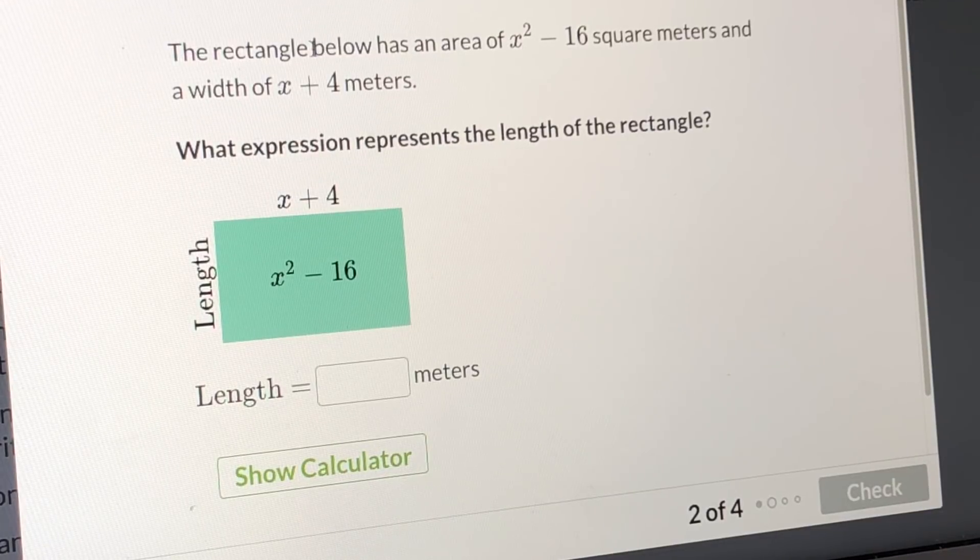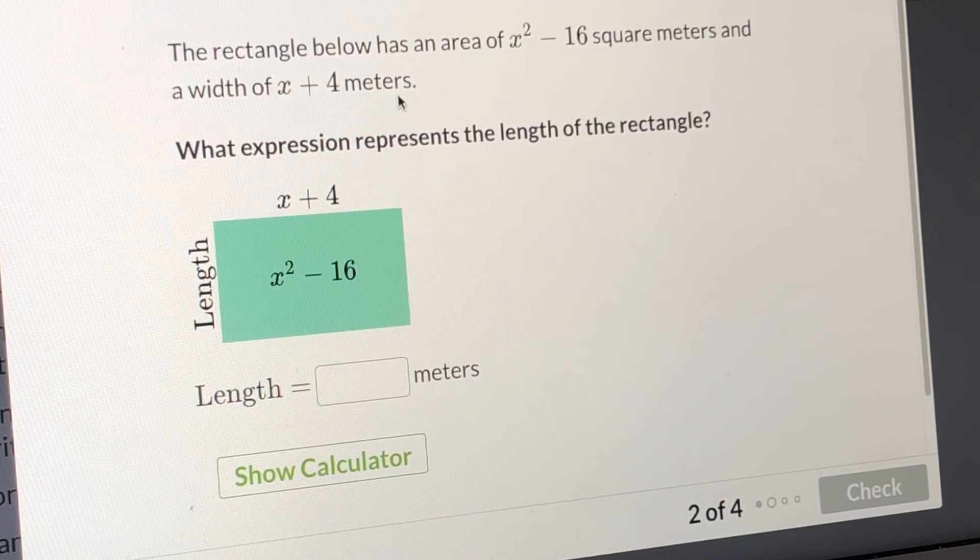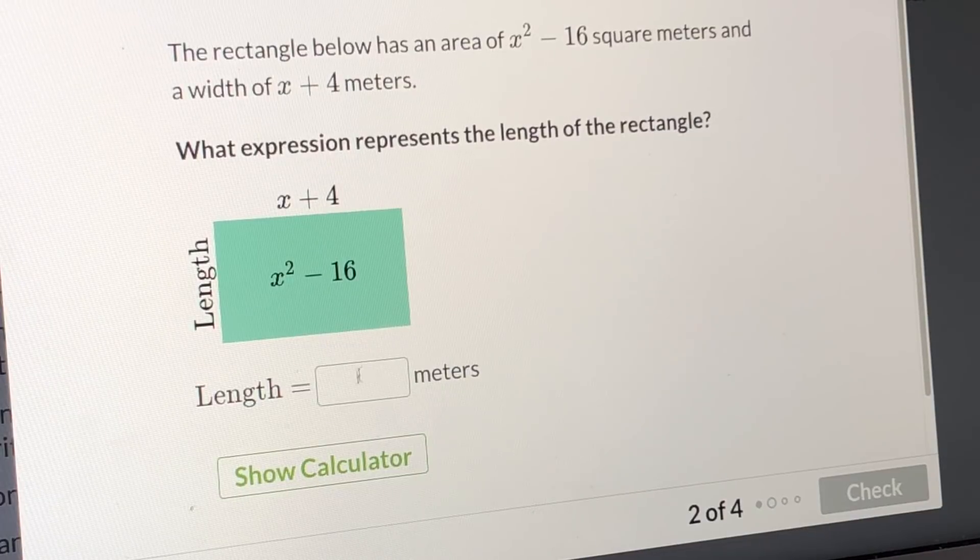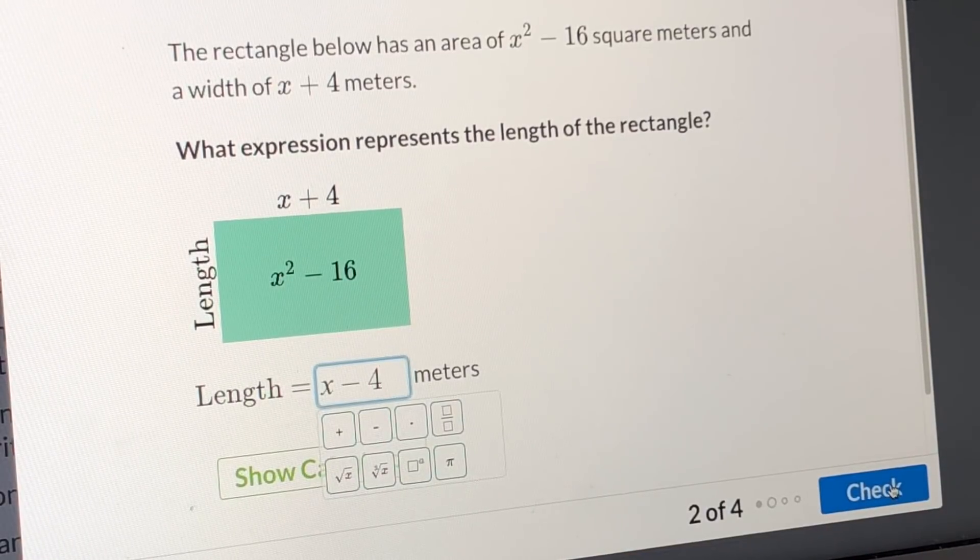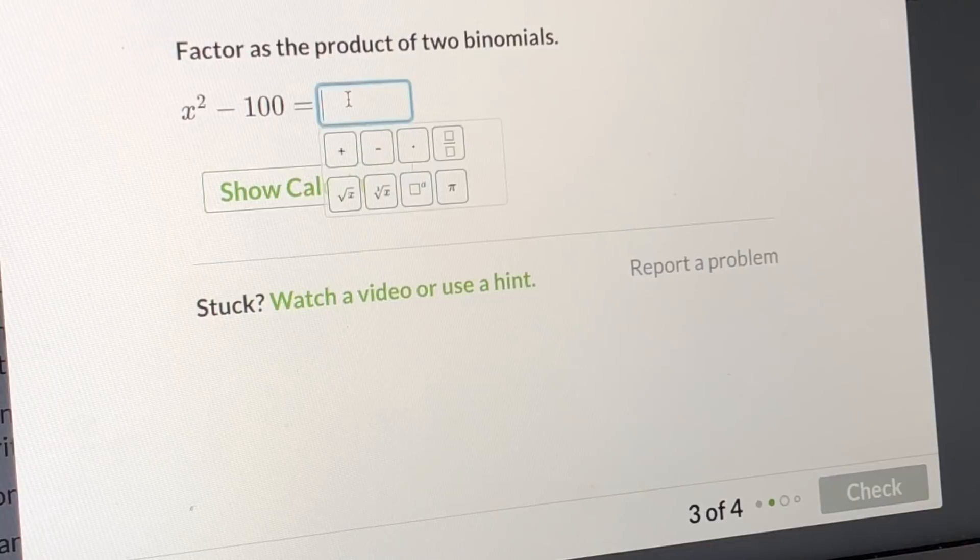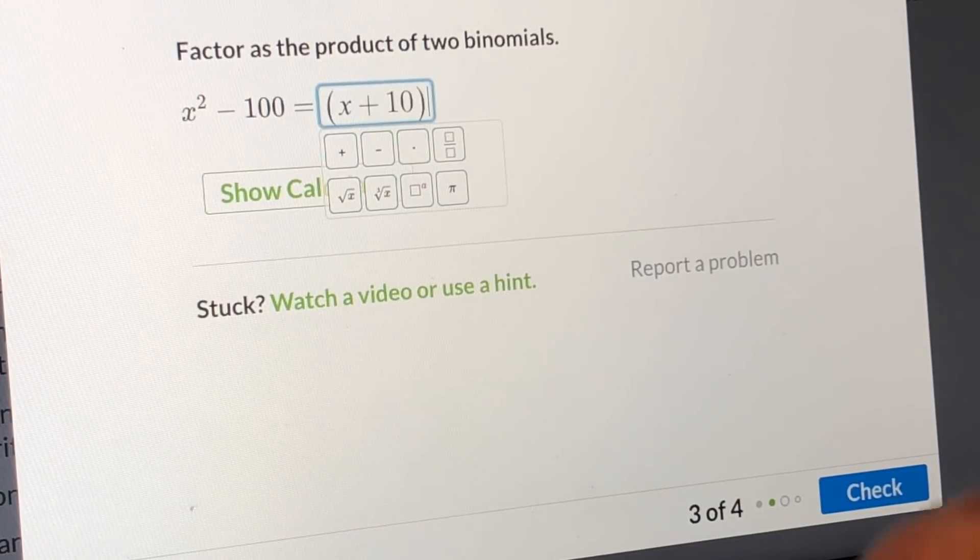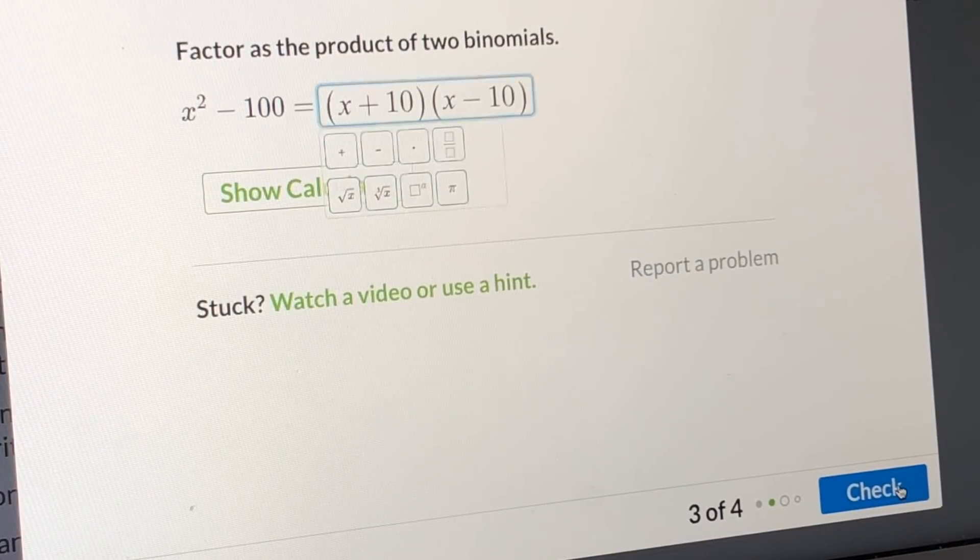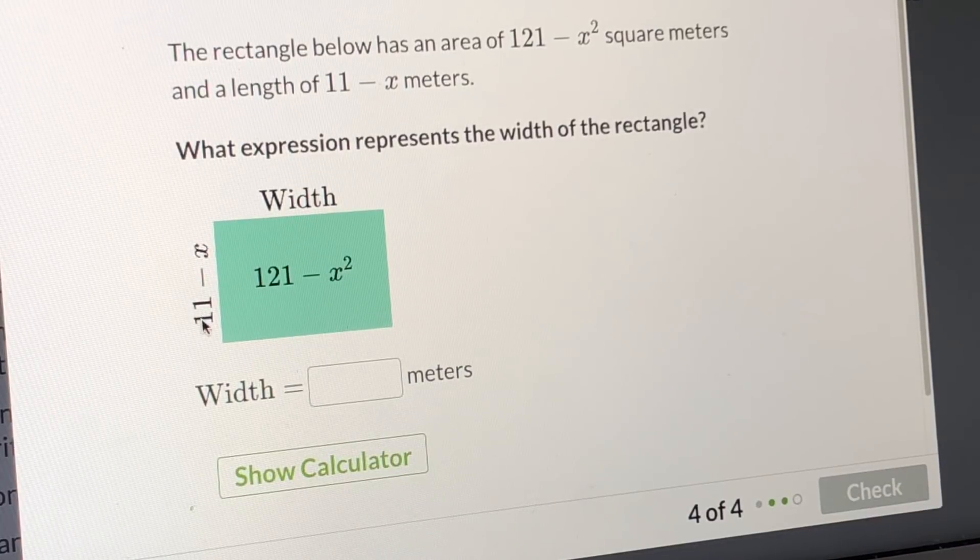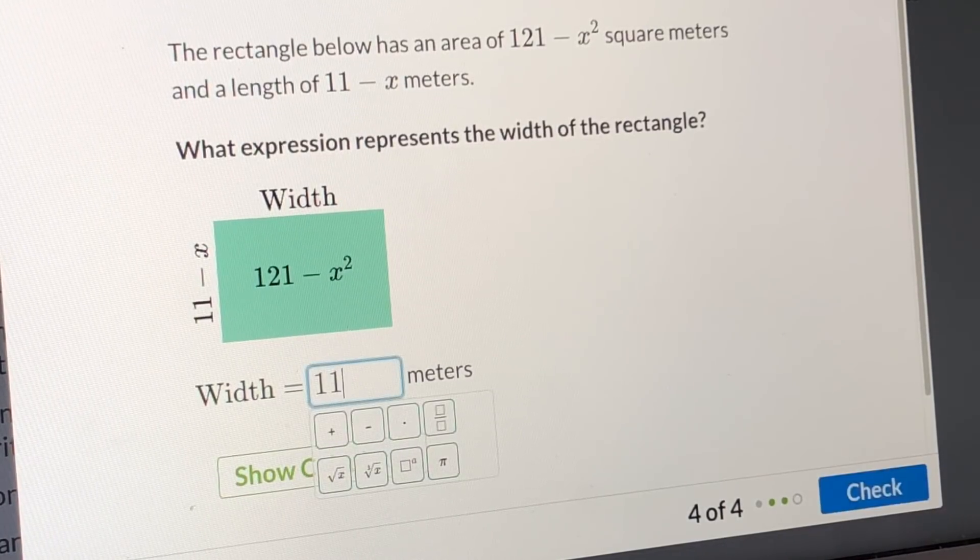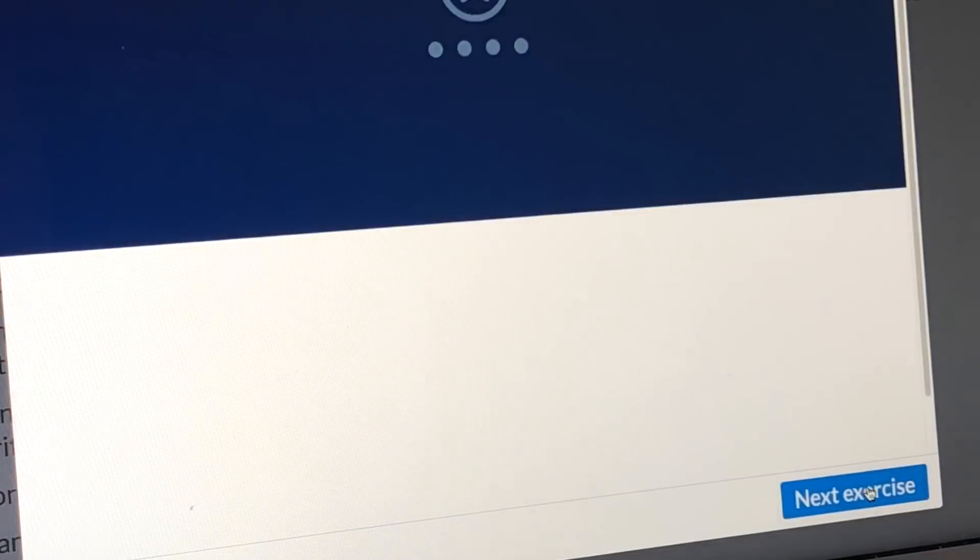The triangular below has an area of x square minus 16 square meter, and the width is x plus 4, the length is x minus 4. Bling. x plus 10 times x minus 10, and now we are getting quicker and quicker. Okay, so this is width, this is 11 plus x. Yes, next exercise.